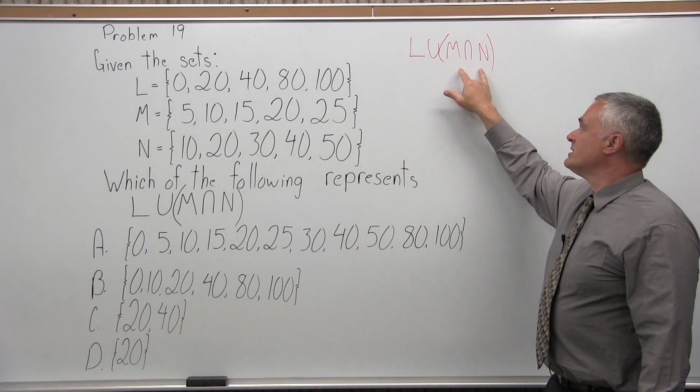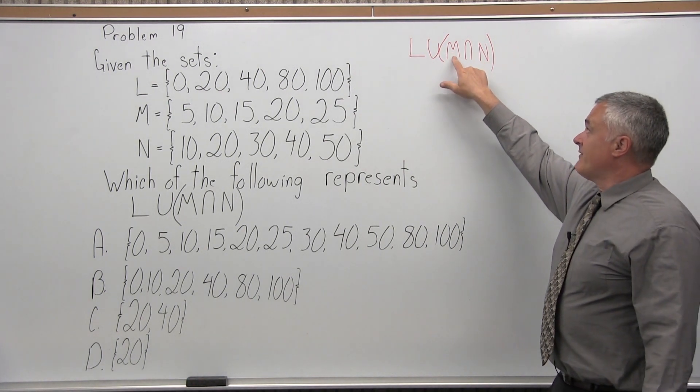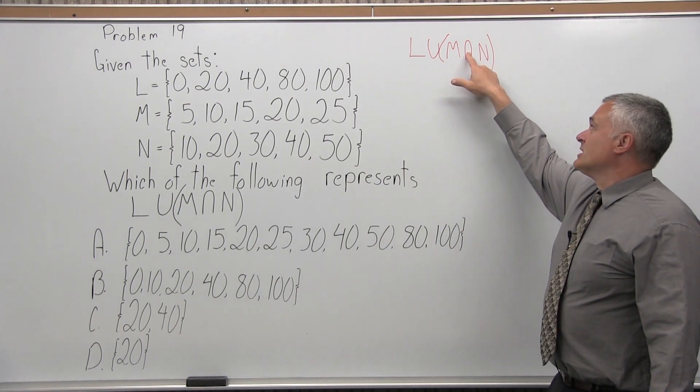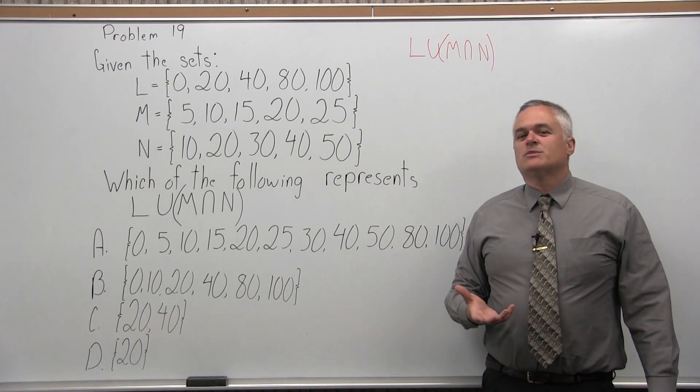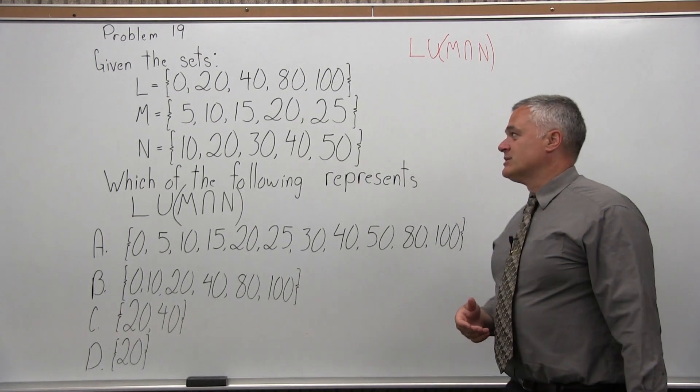Whether it's trigonometry, algebra, whatever it is, I have parentheses. I must do that work in parentheses first. In the parentheses, I have M intersection. Again, that is the symbol for intersection N. So intersection means what items are in both sets at the same time. Where do the sets intersect? That's why it's intersection.